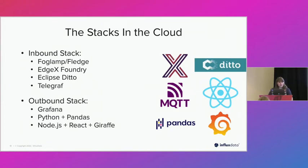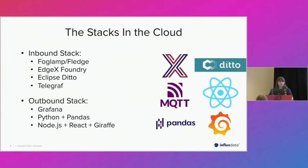Here are some stacks you would find in the cloud. Things like FogLAMP and EdgeX Foundry are IoT edge frameworks built to help control running devices, standardize APIs and protocols, and send data northbound to a system like InfluxDB. Ditto creates digital twins in the cloud — you can use InfluxDB for data replay and running data simulations on a virtual machine. For outbound options, you can use Grafana, Python and Pandas (we have a library for that), and Node.js, React, and Giraffe — something you might see in a phone app or website.